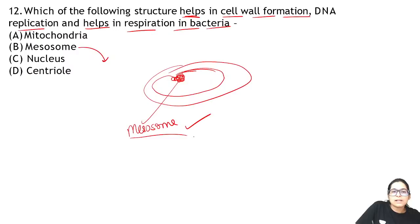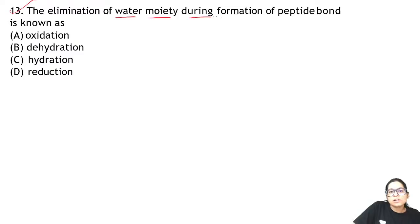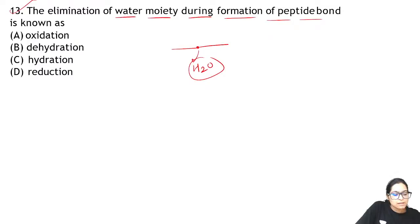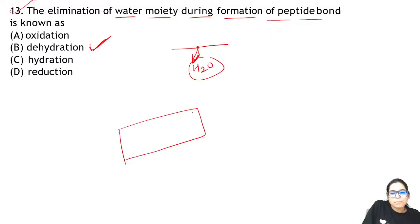Question 13: the elimination of water during formation of a peptide bond — when a peptide bond forms, water is removed and released. This process is called dehydration. We always call the loss of water dehydration, whether in humans or elsewhere. Please improve your video quality if it is not clear.